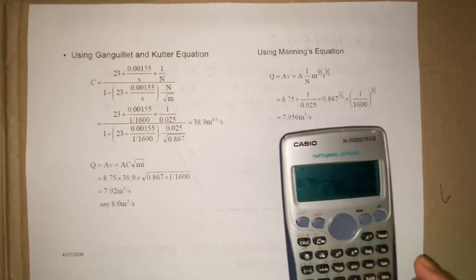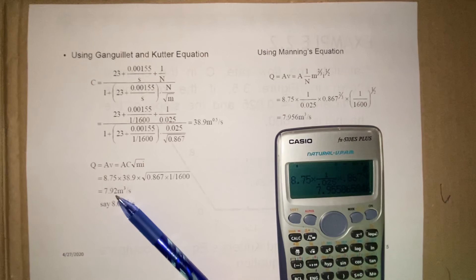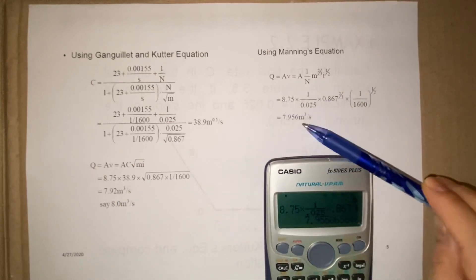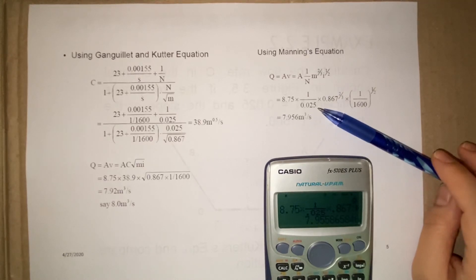So same answer, 7.96. So 7.92 is equivalent to 8 meter per second, while 7.956 also is equivalent to 8 meter cube per second. So the answer is more or less the same.